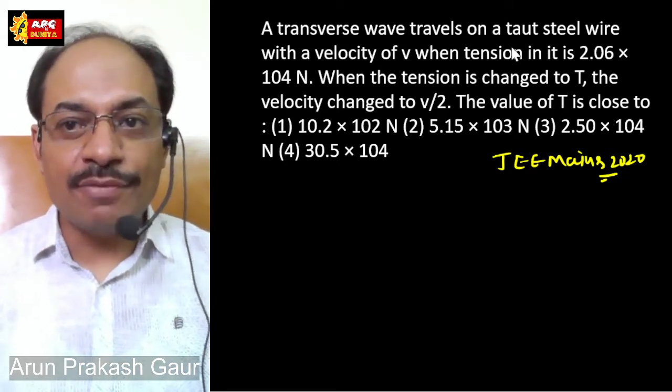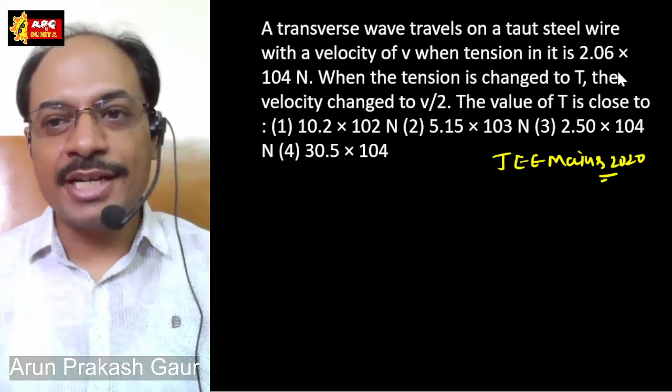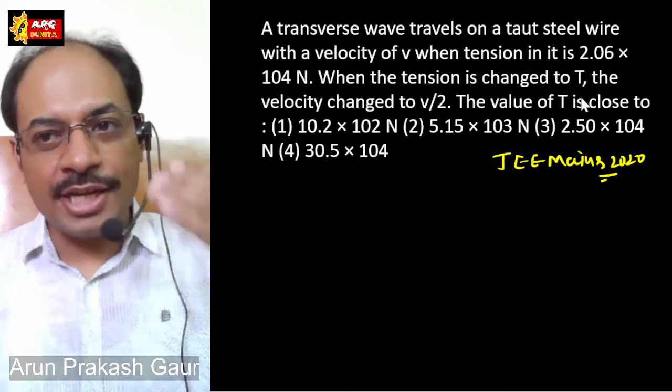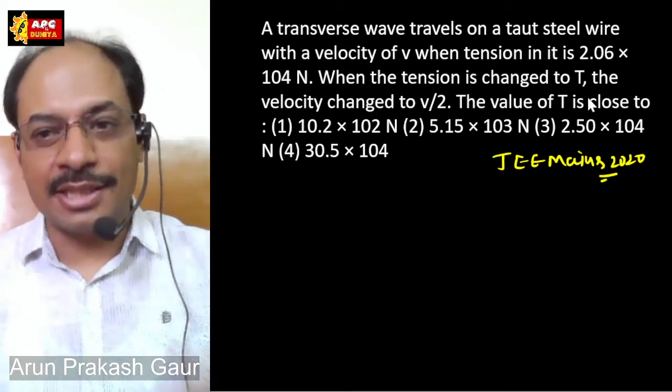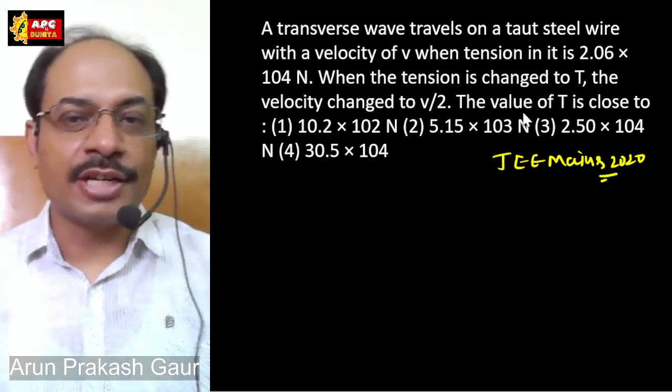A transverse wave travels on a taut steel wire with velocity V when tension in it is given. When the tension is changed to T, when we change it to T, the velocity is added. The new tension is how much it is.